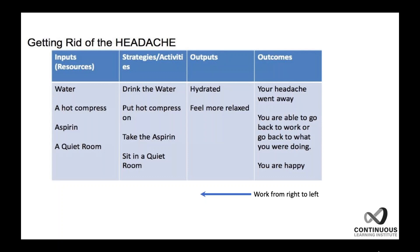Let's use a really simple example that so many of us can relate to, especially nowadays: a logic model to get rid of a headache. You read and create a logic model by working from right to left. Starting at the far right, the outcomes we want are for our headache to go away, to be able to go back to work, and to just be happy. The outputs — things we need to achieve those outcomes — are to be hydrated and to feel more relaxed.